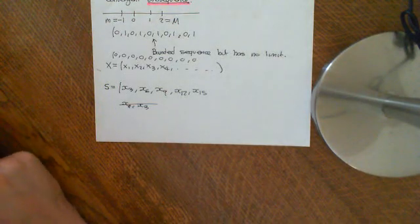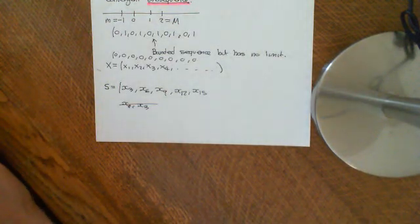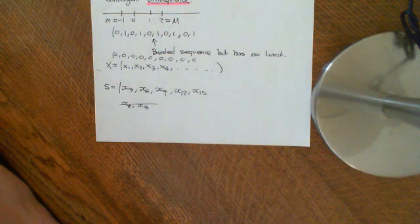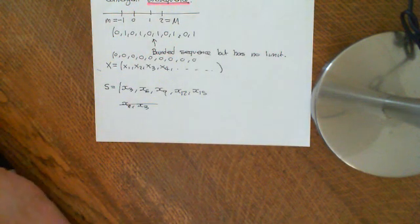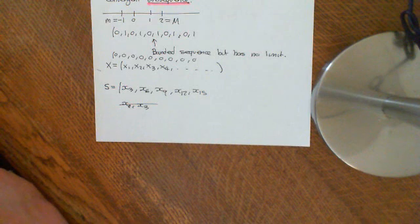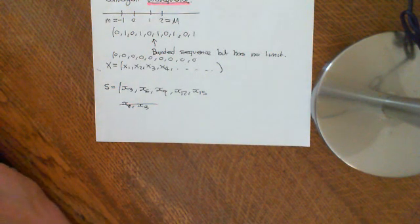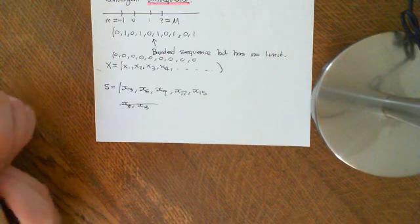In the previous video, we stated the Bolzano-Weierstrass theorem, and now what we're going to do is begin the proof of it. But before we can prove it, there are a few preliminary things that we need to make sure are clear, which we're going to use in the proof of the Bolzano-Weierstrass theorem.